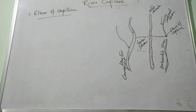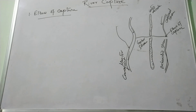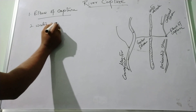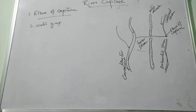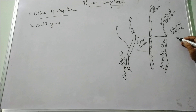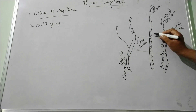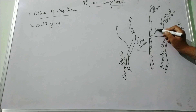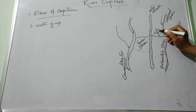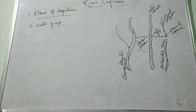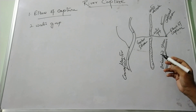Next is the water gap. The water gap is the deep and narrow valley formed by the capture stream through headward erosion across the ridge. This deep and narrow valley formed by the capture stream through headward erosion across the ridge is called the water gap.